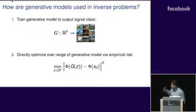Then you want to find the image in its range that best fits your measurements. You can directly optimize over the range of your generative model via empirical risk minimization. I want you to notice a couple of things about this objective function. First, we're optimizing over the input to the generative model. Also, due to the non-linearity of the generative model, this is going to be a non-convex optimization problem.